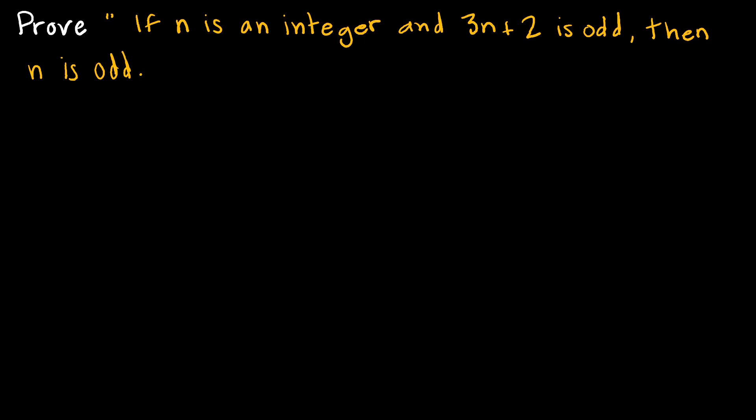We are going to do this proof together. We are going to prove by contraposition if N is an integer and 3N plus 2 is odd, then N is odd. Remember, when we're using contraposition, we look here and assume that is not true. So the consequent would be not true. So I'm going to start this proof saying assume N is not odd or is even.